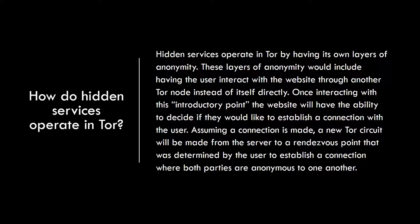Hidden services maintain their own anonymity through a pathing process, which is why we have something known as an onion address. To reach one, you go through something known as an introductory point, which allows the server to decide whether or not the user is permitted to visit the onion address.